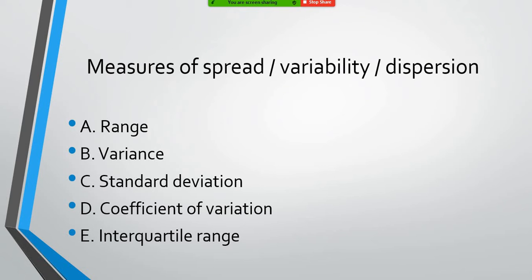So there are five basic measures of spread, variability, or dispersion or variation. And they are range, variance, standard deviation, coefficient of variation, and interquartile range.